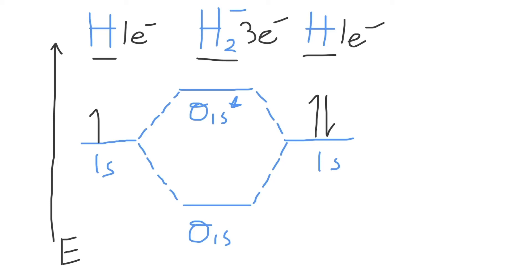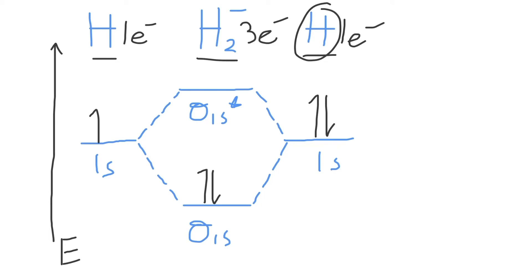According to the Aufbau principle, electrons fill lower energy levels first. Each molecular orbital can hold a maximum of two electrons, so we fill two electrons into the sigma 1s bonding molecular orbital. The last remaining electron then rises up to the sigma 1s star antibonding molecular orbital. This is your completed molecular orbital diagram for the H2 minus molecule.